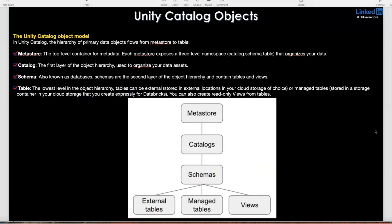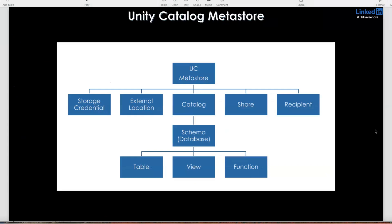Other than this, within a Metastore with a catalog you can also create credentials and external locations, share data, and create recipients. Database or schema are just aliases — you can call it database or schema, both are the same here, there is no difference like traditional databases. You can create tables, views, functions, and external tables. External tables can be created on top of external locations, and you can access those external locations using shared credentials.